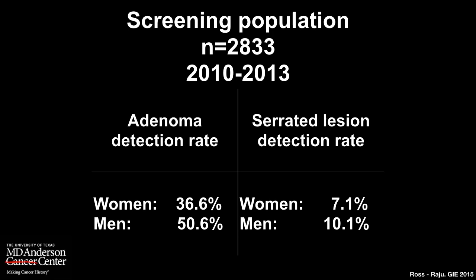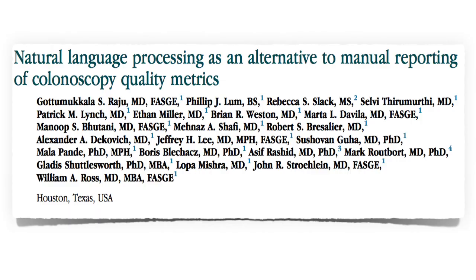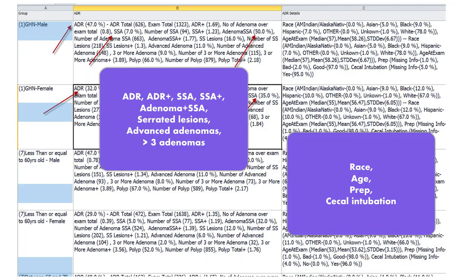We not only have a very high detection rate, we maintain it. We have developed a natural language processing tool as an alternative to manual reporting to measure colonoscopy quality metrics. Our quality officer Dr. William Ross gives us these rates on a periodic basis. We also go into great detail looking at adenoma detection rate, advanced adenoma detection rate, multiple adenomas, and we can also figure out rates based on race, age, quality of prep, cecal intubation, and more.